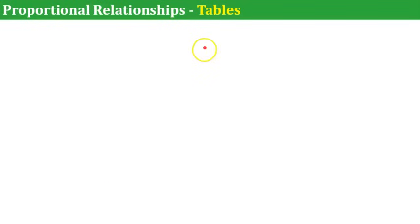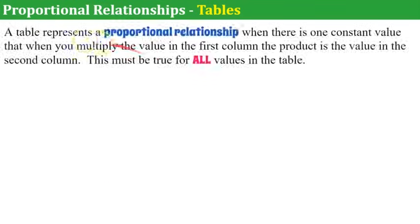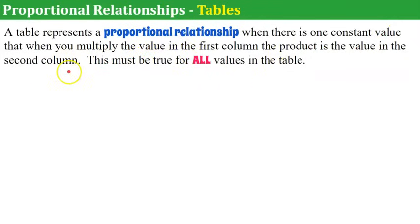Let's talk about proportional relationships and tables first. A table represents a proportional relationship when there is one constant value that, when you multiply the value in the first column, the product is the value of the second column. This must be true for all values in the table.